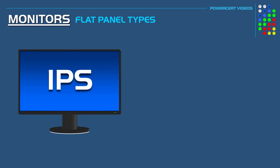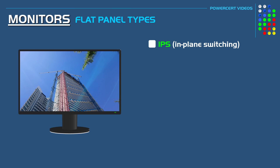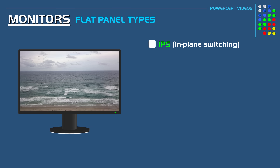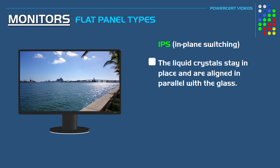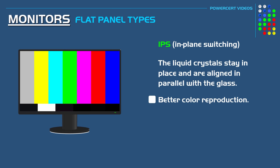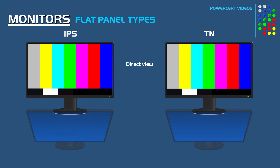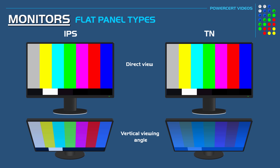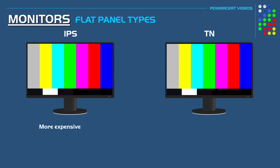A newer and more modern type of flat panel is IPS, which stands for in-plane switching. IPS was developed because of the limitations of TN monitors. Instead of the liquid crystals twisting like in a TN monitor, the liquid crystals in an IPS monitor stay in place and are aligned in parallel with the glass. Because of this, an IPS monitor has better and more accurate color reproduction and a better viewing angle. If you view a TN and an IPS monitor at a vertical angle, the IPS looks relatively the same, while on a TN the image dramatically changes and the colors get washed out. The disadvantages of IPS monitors are that they are more expensive, have a lower refresh rate, and a slower response time compared to TN monitors.